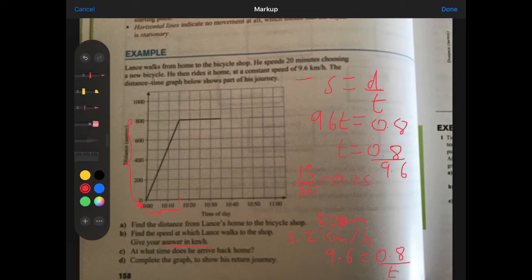And if I take my calculator, 0.8 divided by 9.6 is 0.083 going on forever. I need to change that into minutes. To change that into minutes, because that's hours, that's 0.0833 hours, I am going to do 0.0833 multiplied by 60 because there's 60 minutes in one hour. So I got my answer, multiply by 60, I got 5. So he takes 5 minutes to cycle back home.